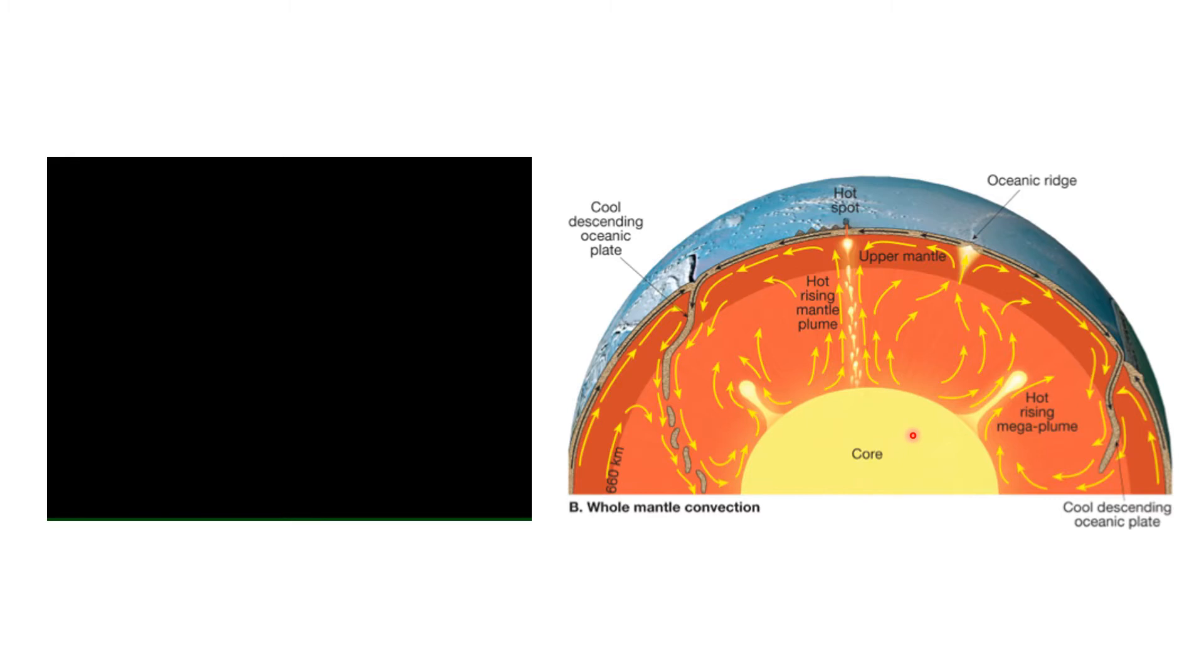The core of the earth is five thousand five hundred to six thousand degrees centigrade, heating up the material of the mantle. This makes a plume of melted rock magma rise up within the mantle to the surface and this superheated mantle plume can burn its way through the earth's crust, creating a volcano here in the middle of a plate.